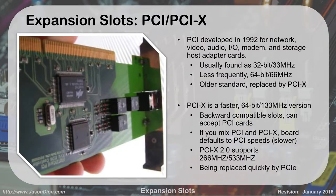So PCI and PCI-X. PCI was originally developed back in 1992 for network, video, audio, input-output, modem, storage, and host card adapters. Usually they were found as a 32-bit expansion card and they operate at 33 MHz, which is really slow compared to what we operate today. If you think about your processor, they're usually two or three gigahertz, which is a thousand times faster than a megahertz.